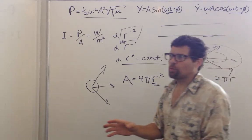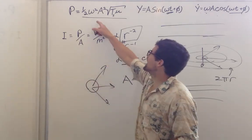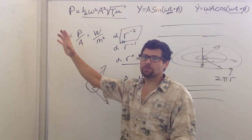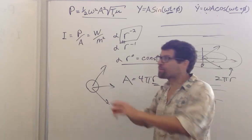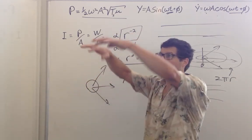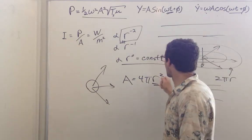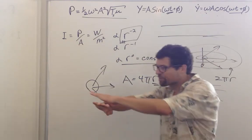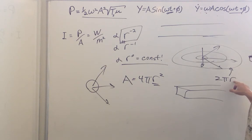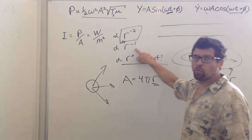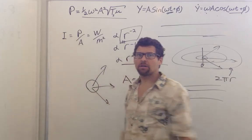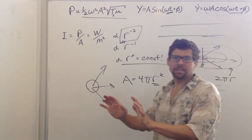So the next time you see a wave, think about it as a transmission of power. If it spreads out in three dimensions, it's going to drop off like r squared because the area grows like r squared. If it spreads out in two dimensions, intensity drops like r to the negative one. And if it's in one dimension and doesn't spread at all, its intensity remains constant.